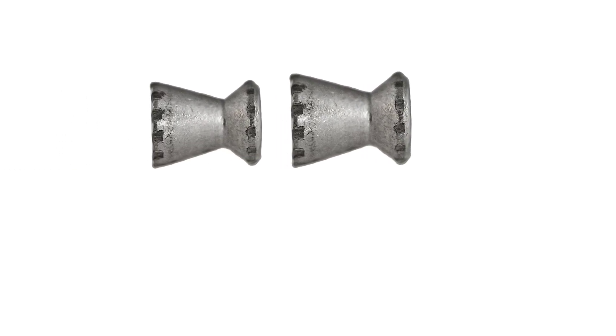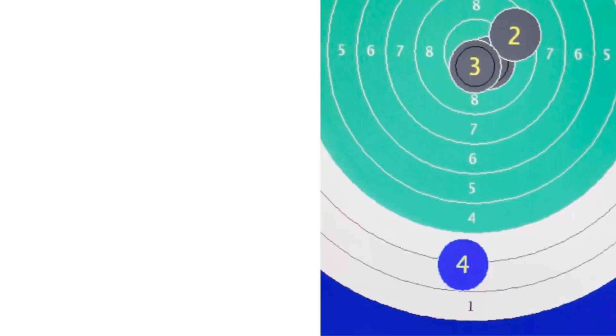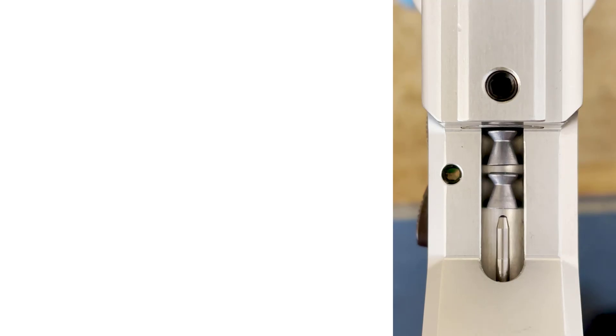But where had the second projectile gone? The electronic system shows only one bullet. Did both Diabolos crash into the same hole or did the second one not reach the target at all?